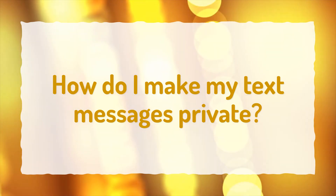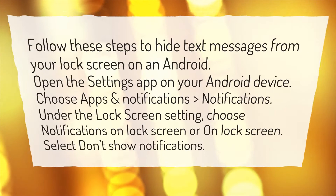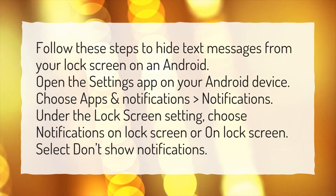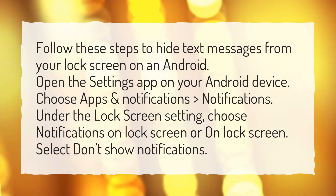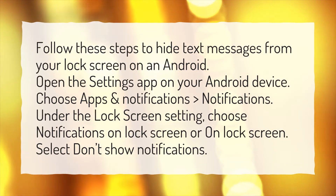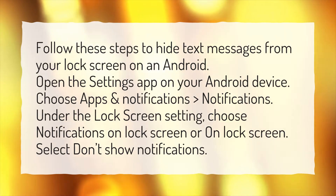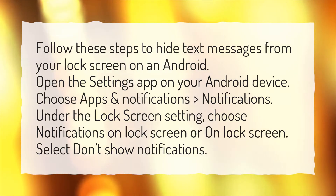How do I make my text messages private? Follow these steps to hide text messages from your lock screen on an Android. Open the Settings app on your Android device. Choose Apps and Notifications, then Notifications. Under the lock screen setting, choose Notifications on Lock Screen. Select Don't Show Notifications.